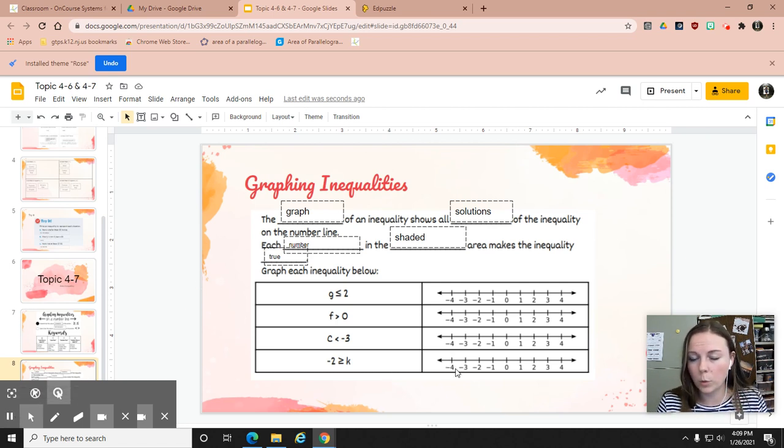The next three blanks is each number in the shaded area makes the inequality true. Basically wherever we shaded or filled in the circle, those are solutions that would make the inequality true. Something about number lines that is helpful is those arrows kind of say, well, after four, everything after four, including it. So we're going to fill in the number line itself and those arrows to represent we're going to go on forever.